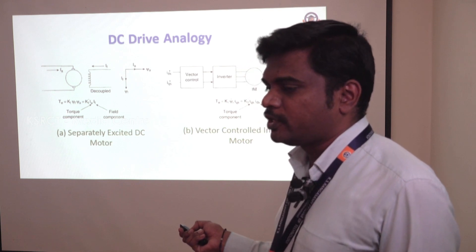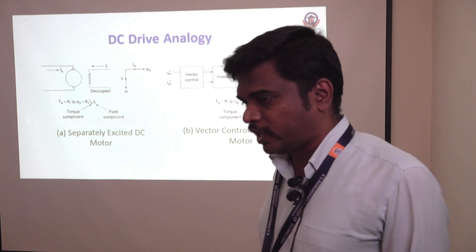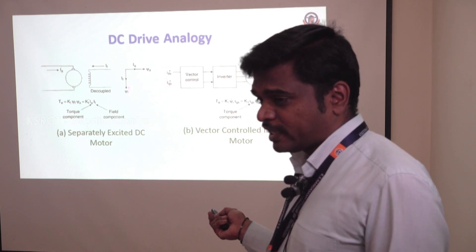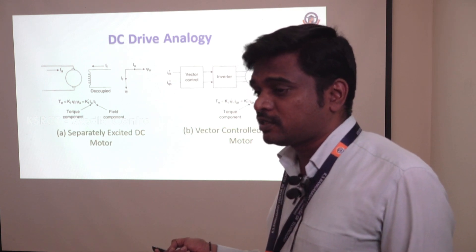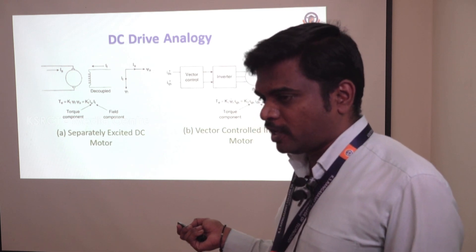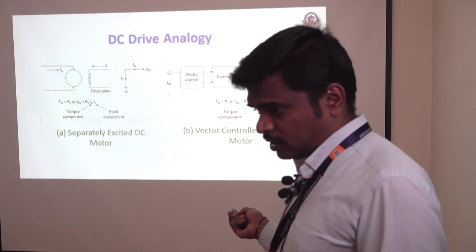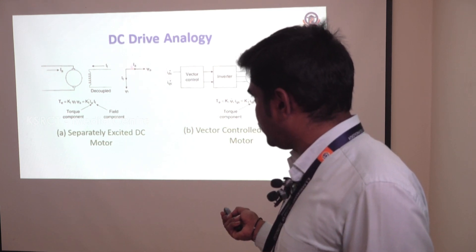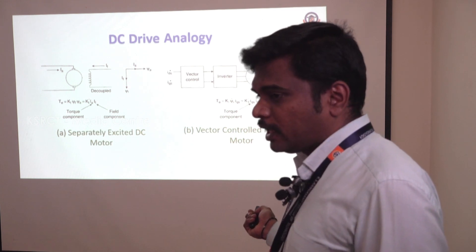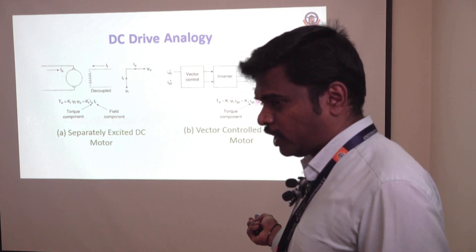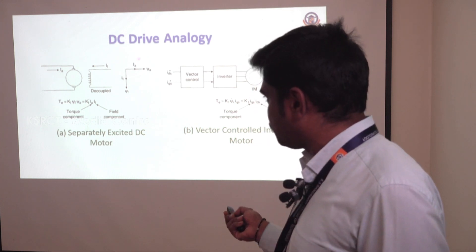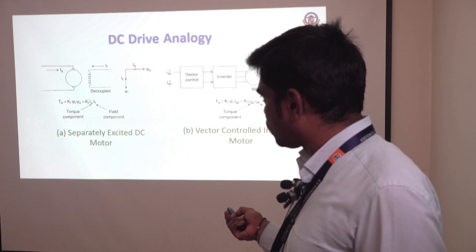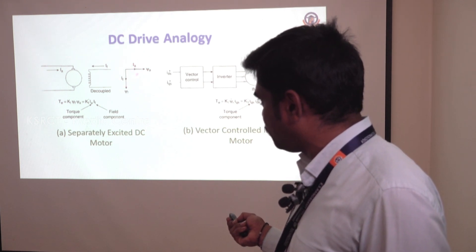The same principle is used in vector control for the induction motor drive. Here the ABC quantities are converted into quadrature axis (IQS) and direct axis (IDS) components — that is, three-phase quantities are converted to two-phase quantities — in order to obtain accurate and precise speed control. IDS and IQS are analogous to the armature current IA and field current IF. The direct axis component is varied to control the rotor flux, and the quadrature axis is perpendicular to the direct axis, giving a decoupled nature of armature and field current.